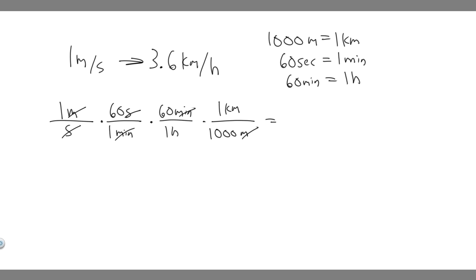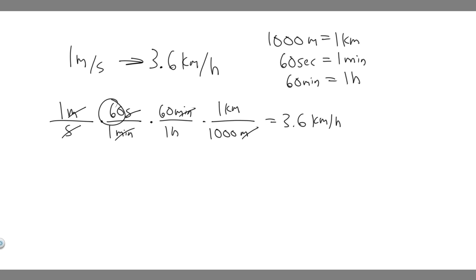Now we just multiply it out, and you'll see it comes to 3.6 kilometers per hour. This makes sense: 1 times 60 is 60, times 60 is 3,600, divided by 1,000 is 3.6.